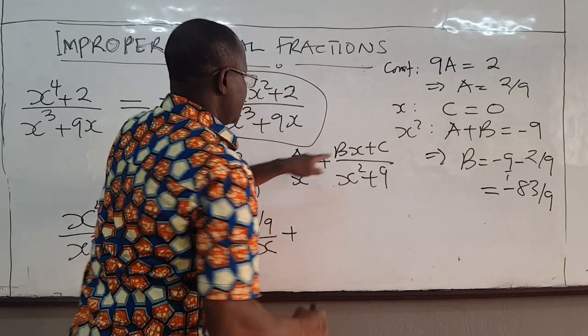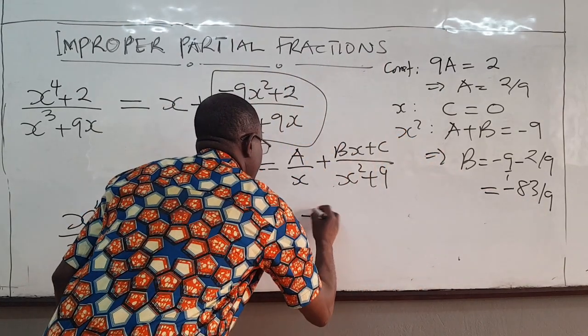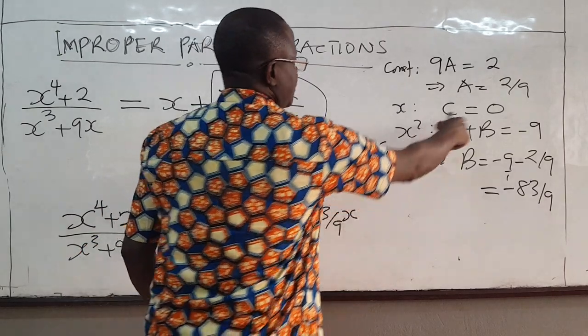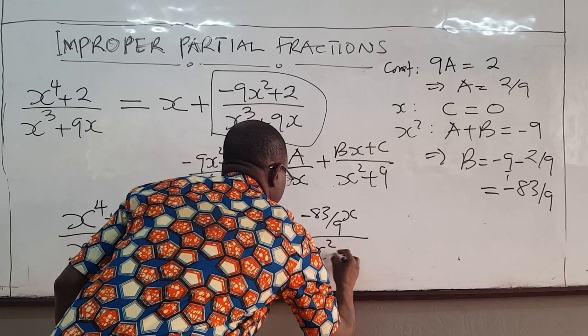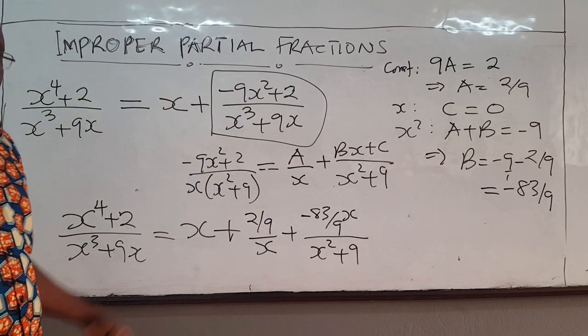Plus b is given by negative 83 over 9. Negative 83 over 9x. C was 0 all over x squared plus 9. So really that is it.